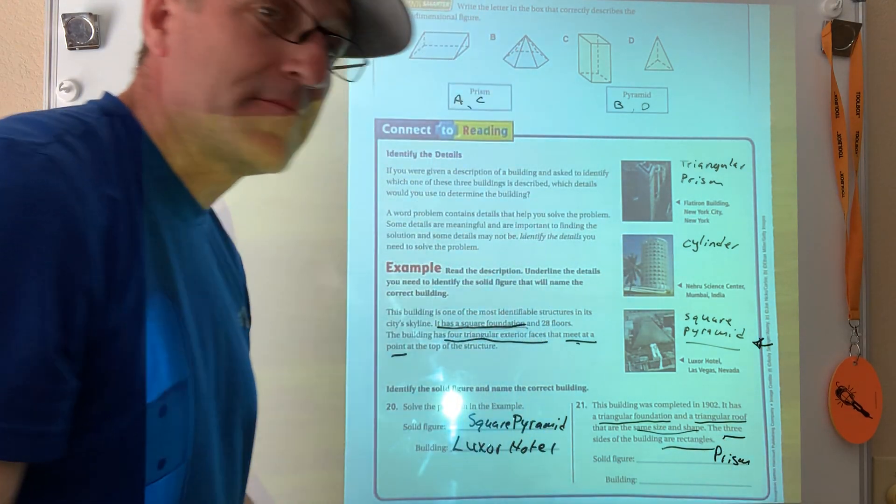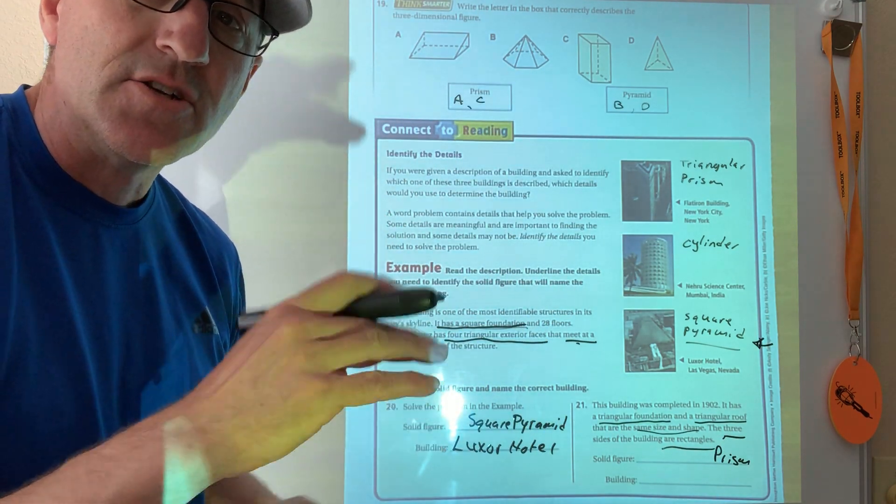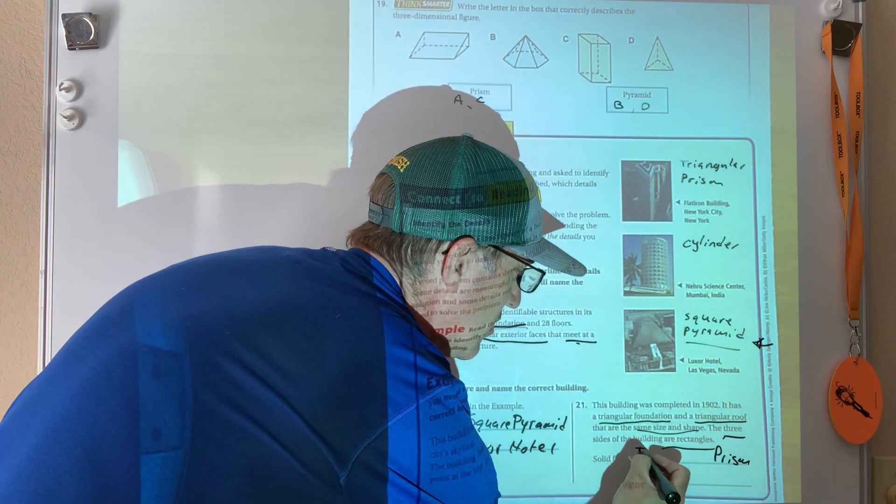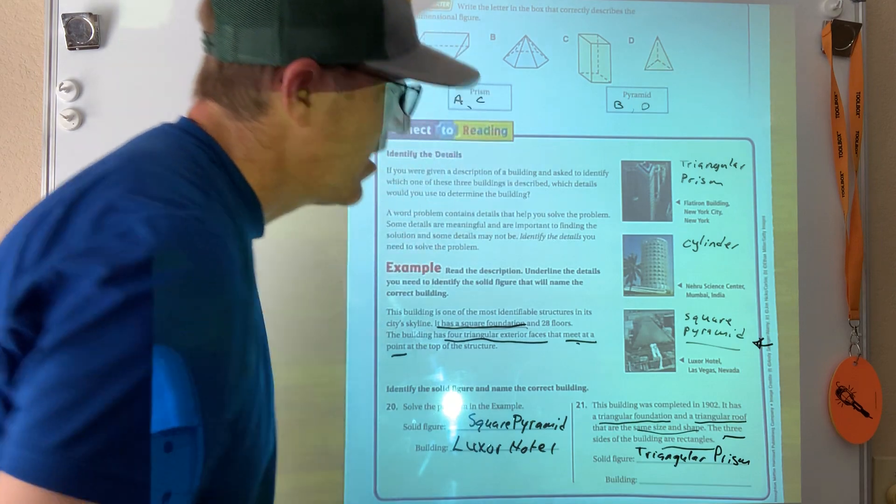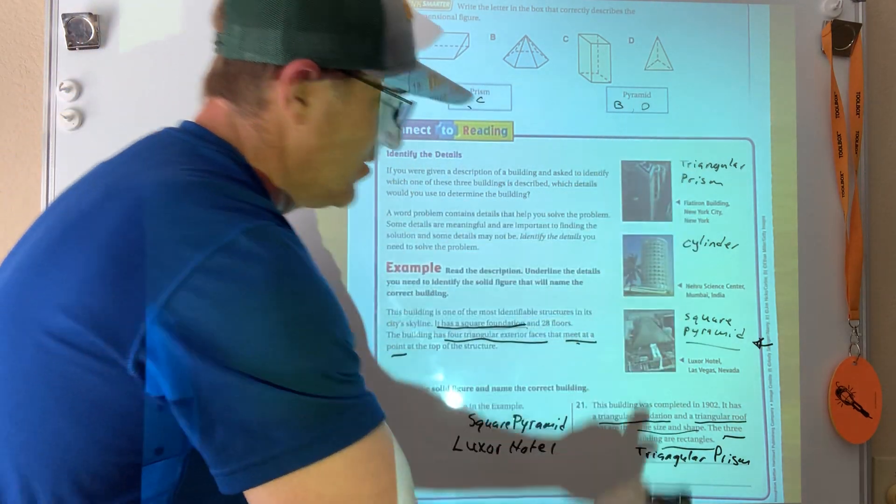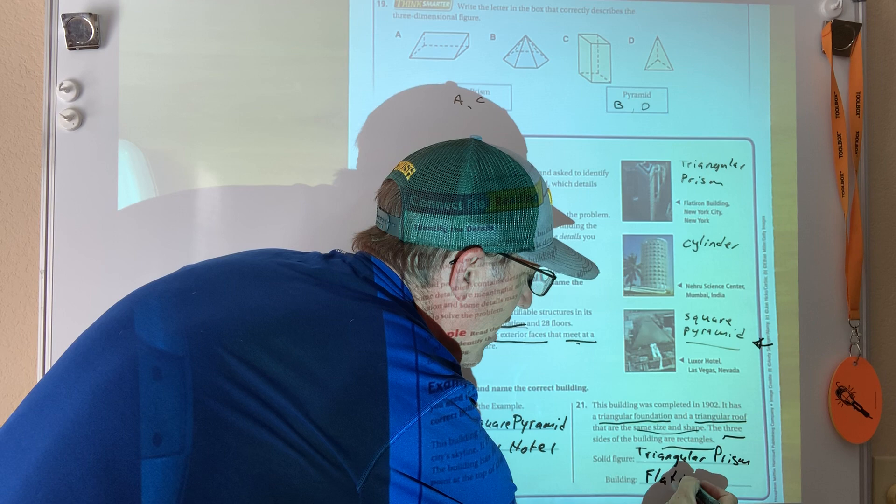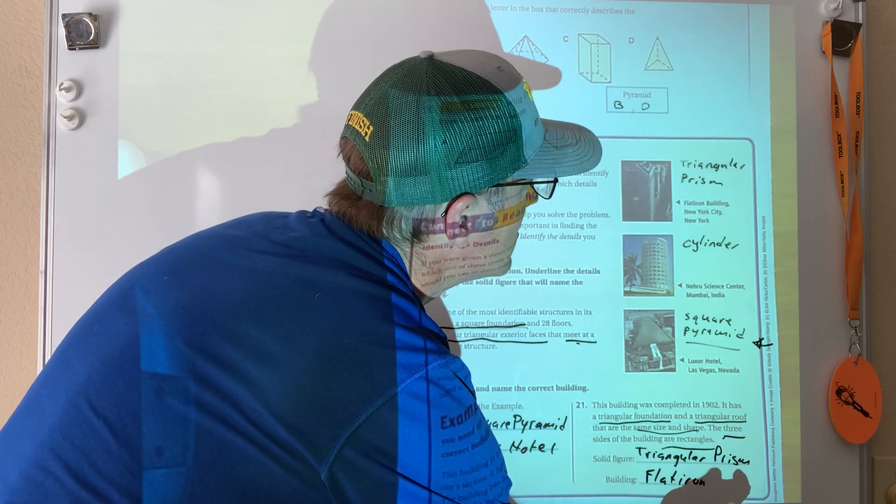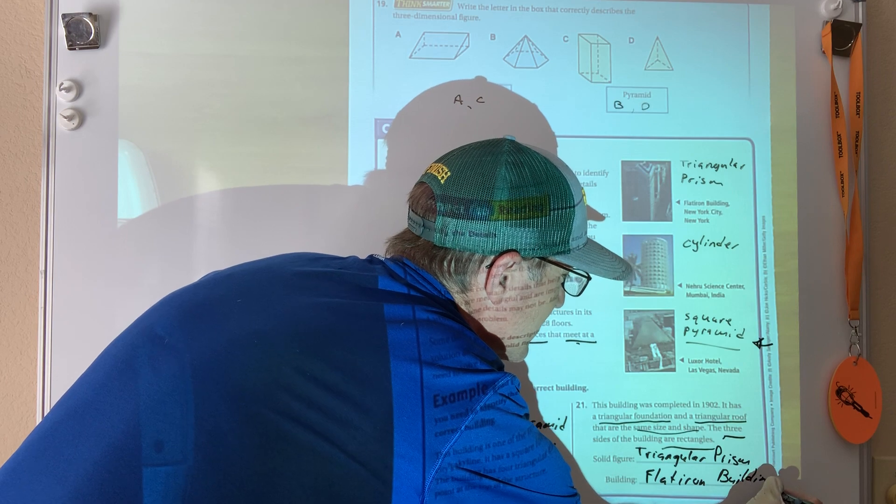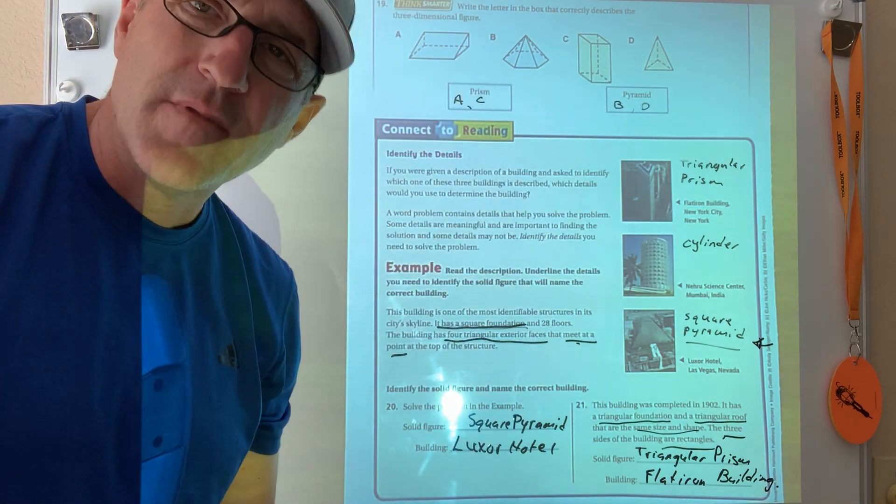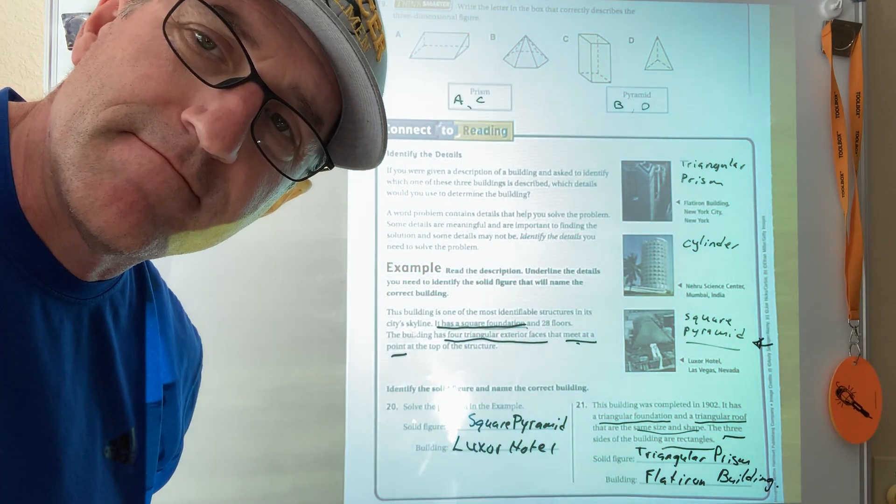All right, and the shape of the base was a triangle, so it's a triangular prism. And my triangular prism is the Flat Iron Building. Flat Iron Building. All right, cool, good job. All right, homework's coming up next.